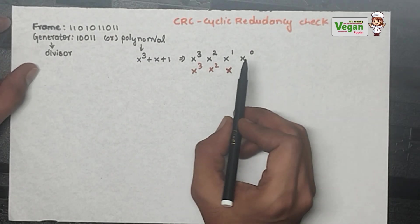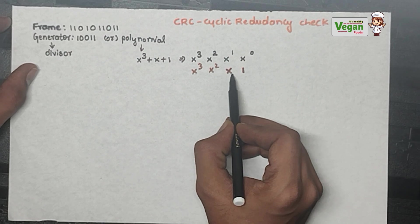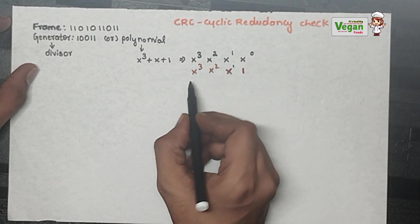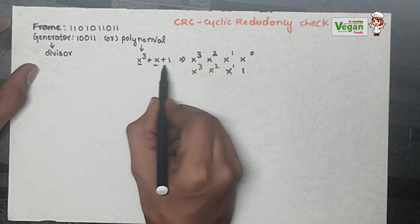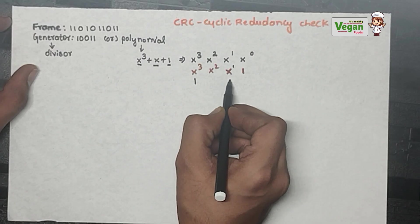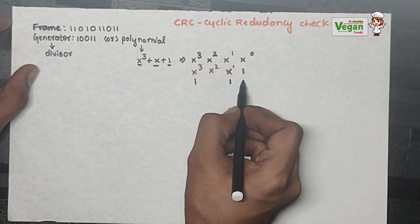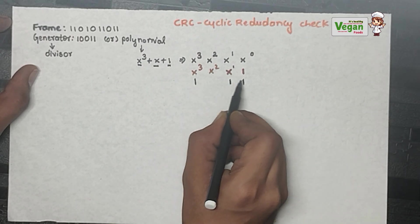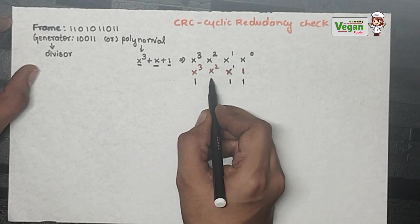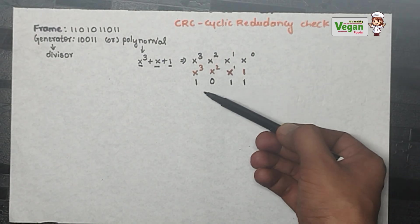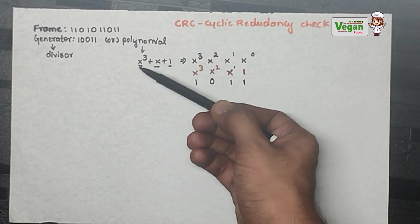x¹ can be directly written as x; if there is no coefficient, you can assume it as 1. So, the values present in the given polynomial are: x³, x¹, and 1 (x⁰). I put 1 for x³, 1 for x, and 1 for x⁰. x² is not there, so I use 0 to represent it. This is the binary conversion: 1011.